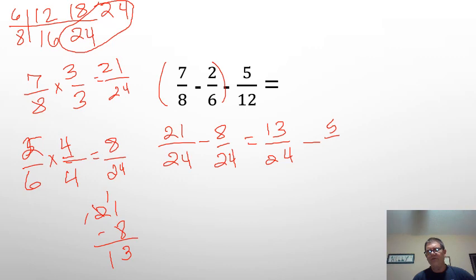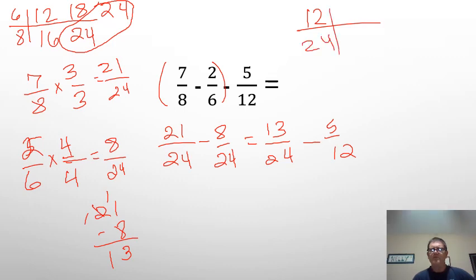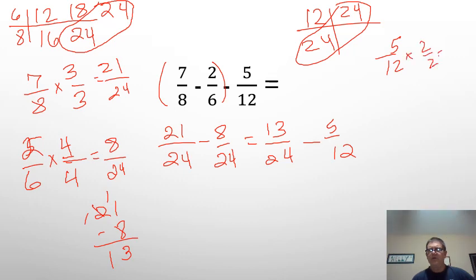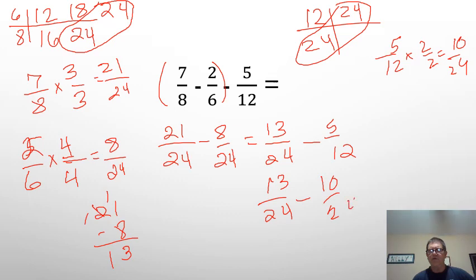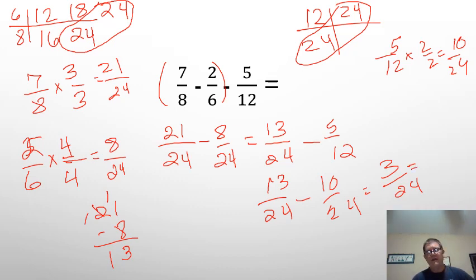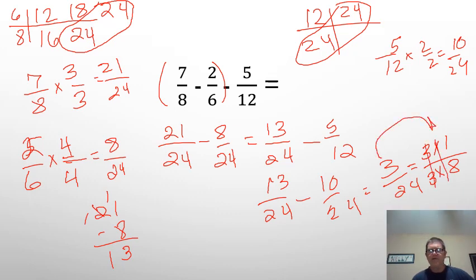We still have to subtract 5/12 from 13/24. But if you look, 12 and 24 — the next multiple of 12 would be 24. So we can just turn them both into 24ths. 5/12 times 2/2 would equal 10/24. So now I have 13/24 minus 10/24 equals 3/24. Now, 3/24 — I know 8 times 3 is 24. So 3 times 1 here and 3 times 8 would equal 24 — take out the common ones. So I know 3/24 would be equal to 1/8.